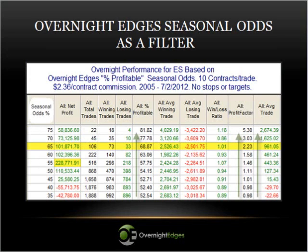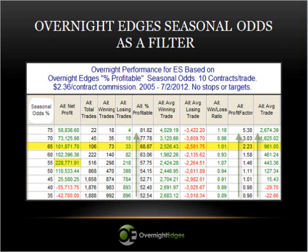What I'm showing here is a Trade Station optimization report. It's looking at taking the number I highlighted on the odds sheet and simply using that to determine whether to take a long position overnight in the ES. The far left column shows the required number that would need to appear on the odds sheet for a trade to take place. It then calculates how the account would have performed if it went long 10 ES contracts at the 4:15 close and then sold those contracts at the 9:30 a.m. open the following trading day. It also assumes a commission rate of $2.36 per contract.